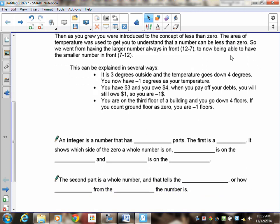So, how do we explain negative numbers? Well, it is 3 degrees outside. The temperature goes down 4 degrees. It's going to go down 3 until it gets to zero, and then one more degree, so now we're below zero at negative 1. Or, you have $3 and you owe $4. So when you paid off your debts, when you got rid of the $3 you had, you still owe $1 to somebody, so you're still down $1 or negative $1. Or, you're on the third floor of a building and you go down 4 floors. If you count the ground floor as zero, now you're one floor below ground, probably in the parking lot or underground parking, so you're at negative 1 floors.